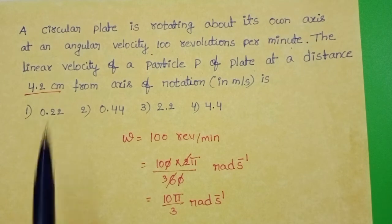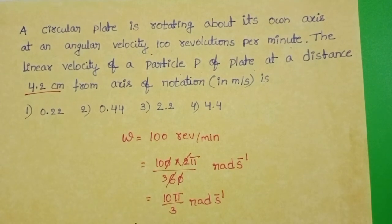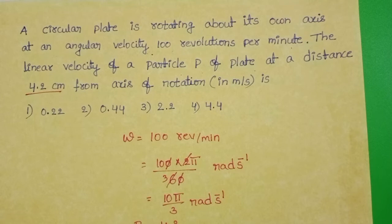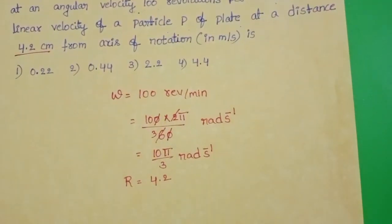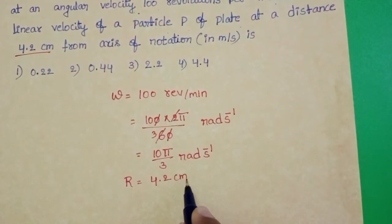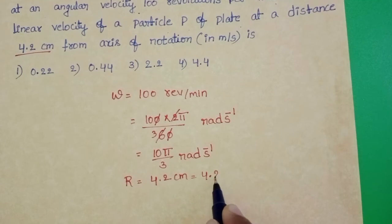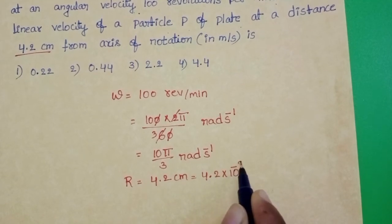Given distance equals 4.2 cm. So R equals 4.2 cm, convert into meters. 4.2 into 10 power minus 2 meters.